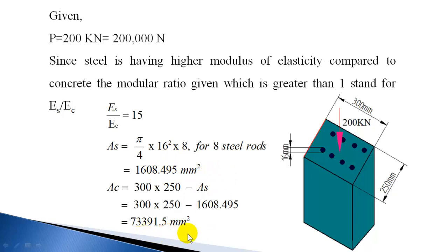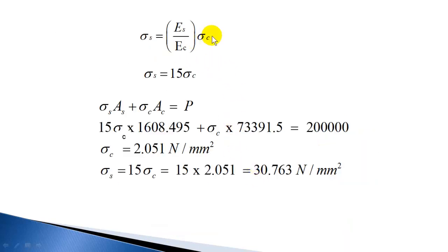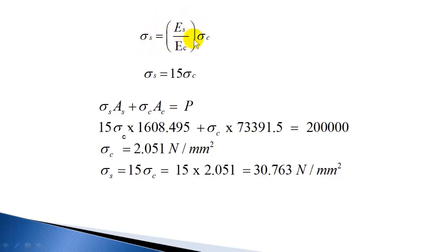The first equation comes from the compatibility condition: strain in steel equals strain in concrete. So σs/Es = σc/Ec. Rearranging this gives σs = (Es/Ec) × σc.